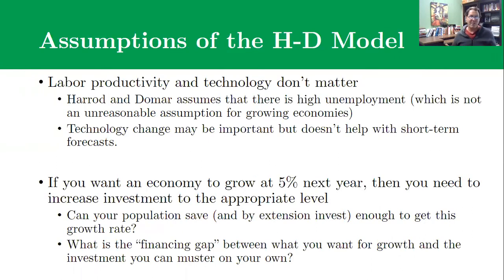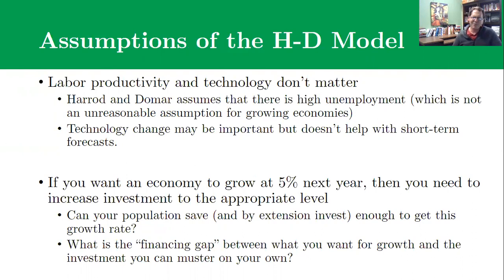One way to think about this: if you're in the middle of the Great Depression with 15 percent unemployment, and you can buy more machines and put people to work, when you run out of people to put to work — well, then we can have a conversation about how the Harrod-Domar model doesn't work, because we've solved unemployment and the Great Depression. But for a longer-term forecast, that's more problematic. We're also not building in change over time or better machines, but again, for a short-term forecast — what do we need to do to get economic growth next year — the Harrod-Domar model actually helps answer that question.